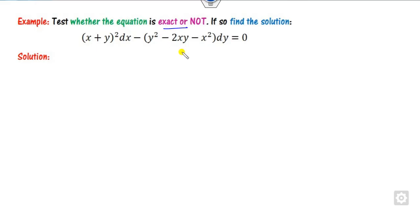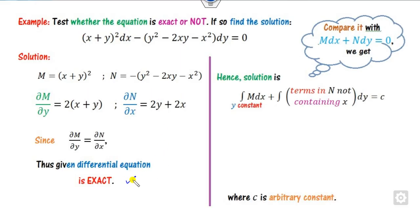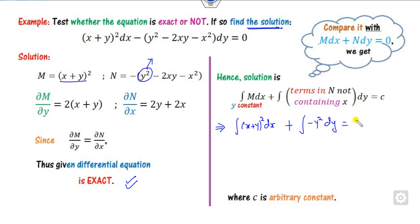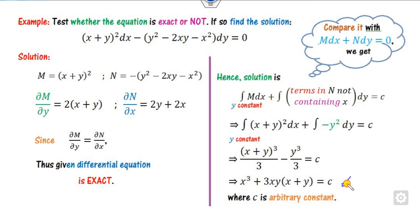Look at another example — check whether this is exact or not. You compare to get M and N, then find the partial derivative of M with respect to y, which gives a certain expression. The partial derivative of N with respect to x gives 2y − (−2x) = 2y + 2x. Both are the same, so this is exact. Once exact, the solution formula applies. The term in N not containing x is −y². Integrating gives (x + y)³/3 minus y³/3 = c, or you can simplify further.